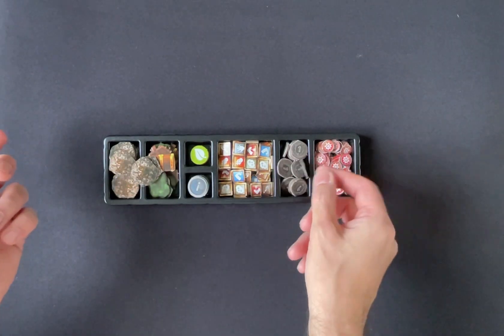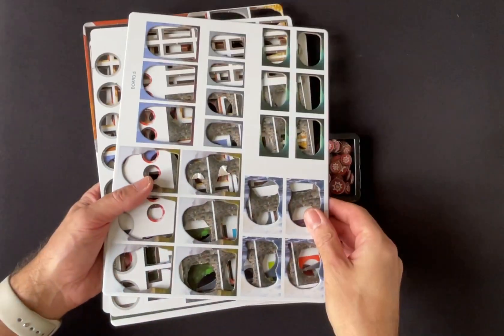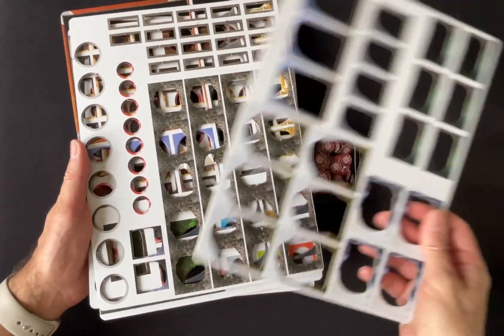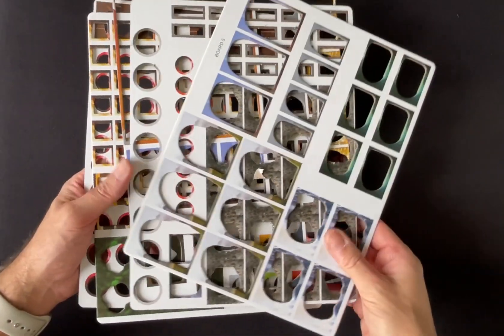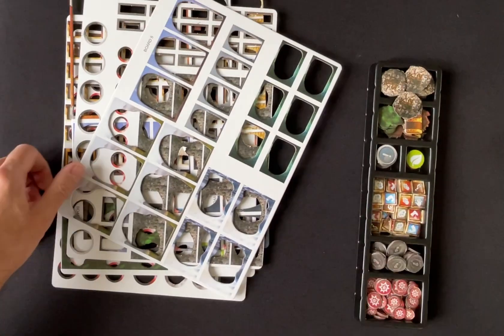The thing is though, that when you do that, you end up with punching all these out and you have all this scrap. It's got lots of holes in it because you've used it and you've popped out the tokens that you want.